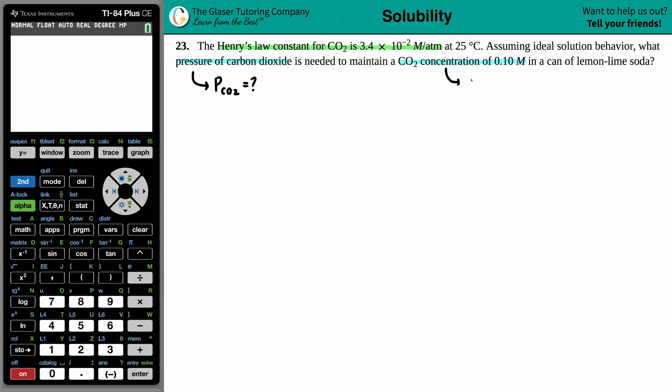And they did tell us that we had a CO2 concentration of 0.10 molarity. Now just know that concentration is another way of saying molarity. So it checks out. Concentration, molarity, capital M, they all go together.